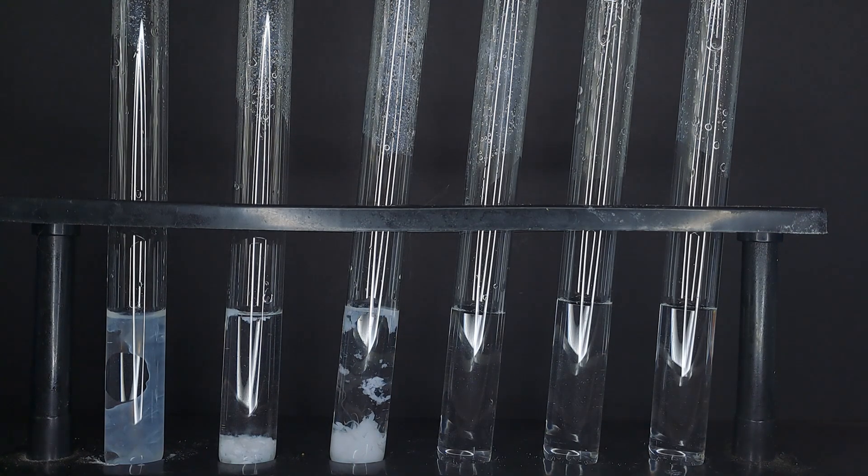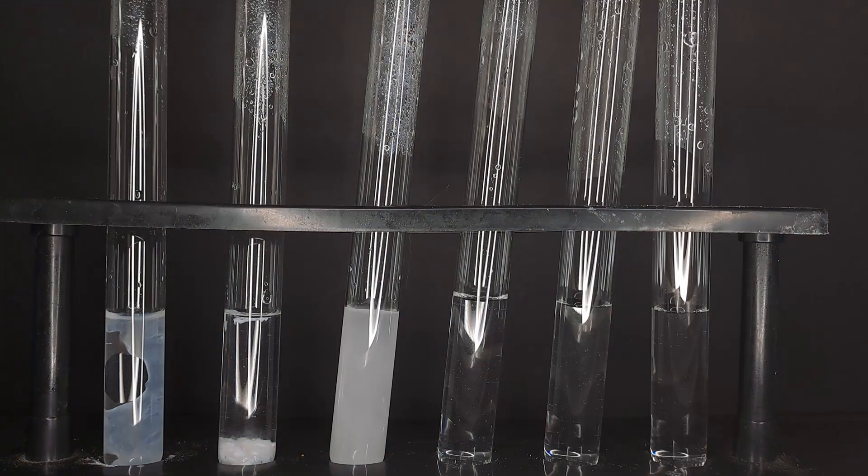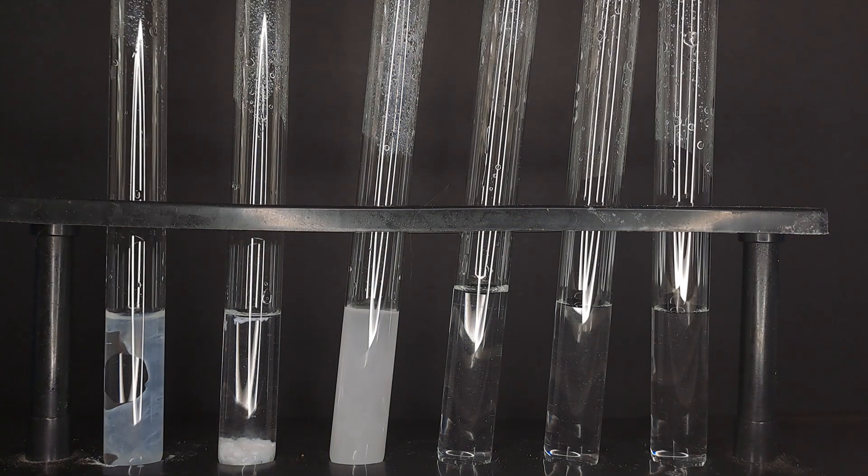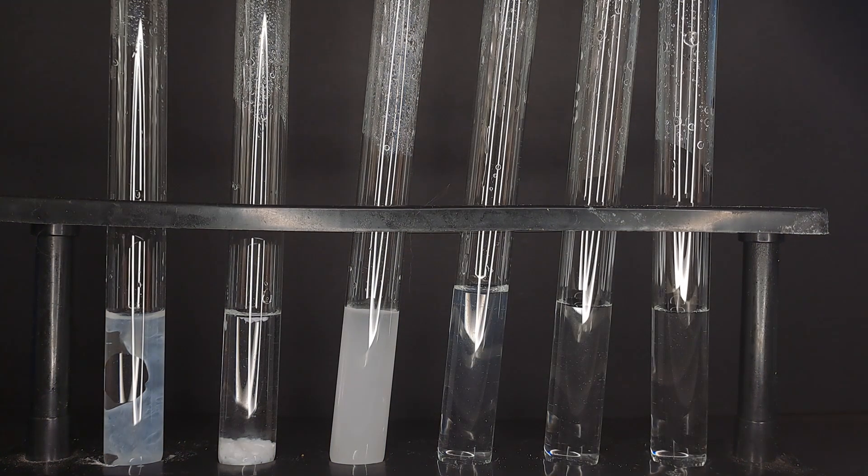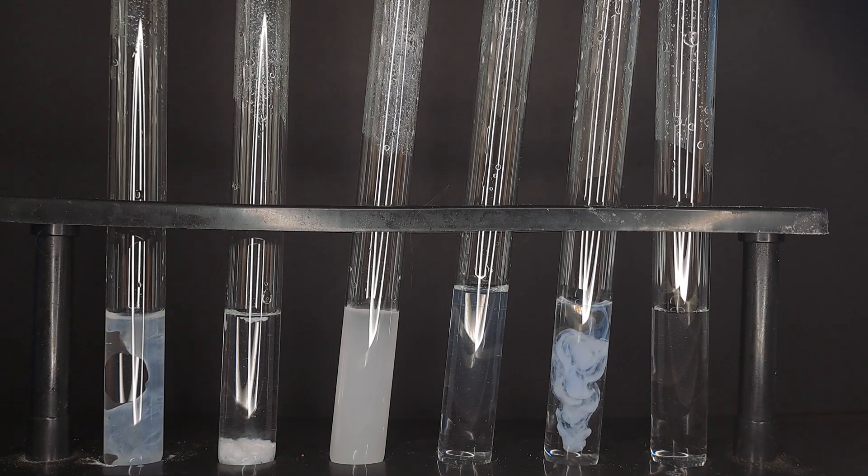In the fourth test tube we add 0.1 molar sulfuric acid and then 3% hydrogen peroxide. Initially nothing happens but keep your eyes on the test tube as we proceed.